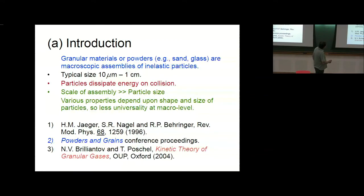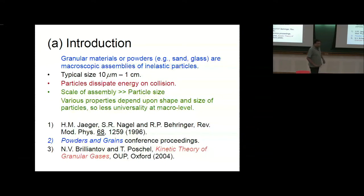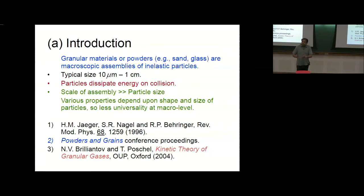As I said, various properties are going to depend upon the shape and size of the particle. So there's less universality at the macro level, at the everyday experience level. But nevertheless, as a physicist, I want to identify points of universal behavior. I'm still going to target the universality that exists, but I'll be clear that lots of stuff will depend upon the precise nature of the microscopic particles — unlike usual statistical physics where you don't really worry about the shape of atoms or molecules.